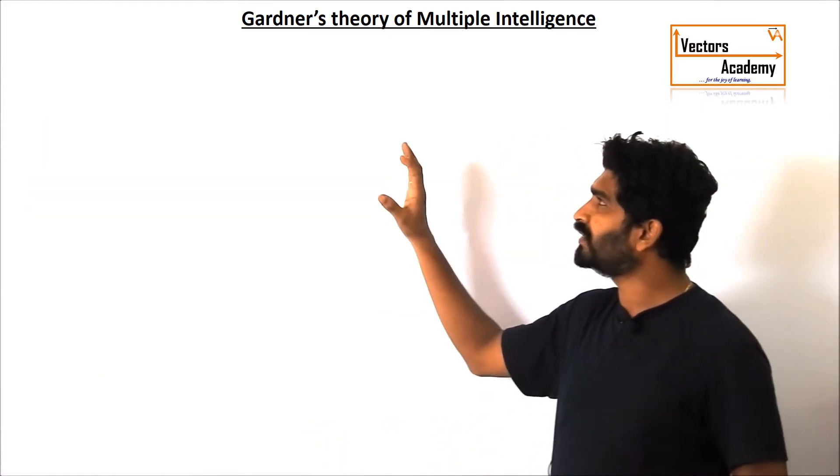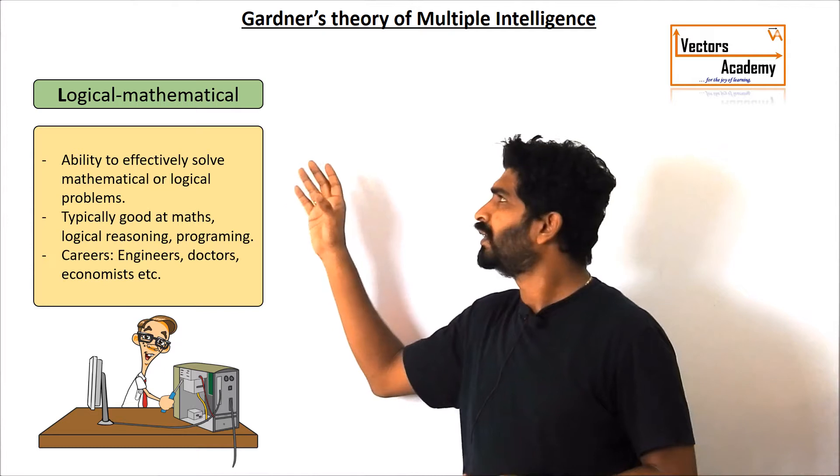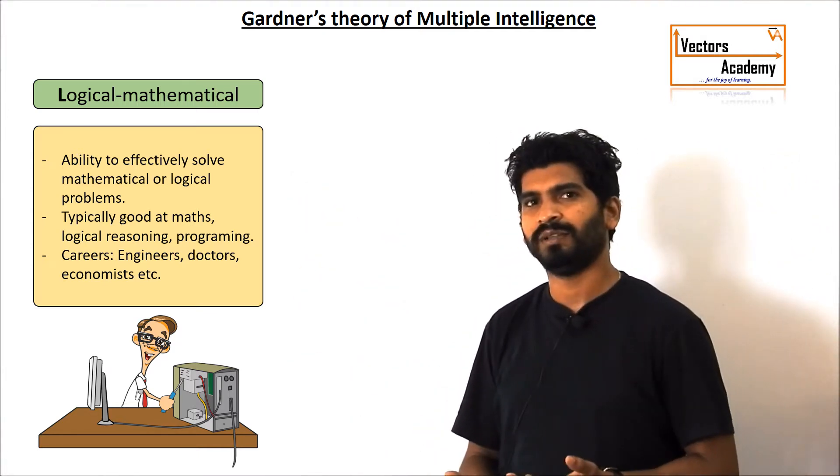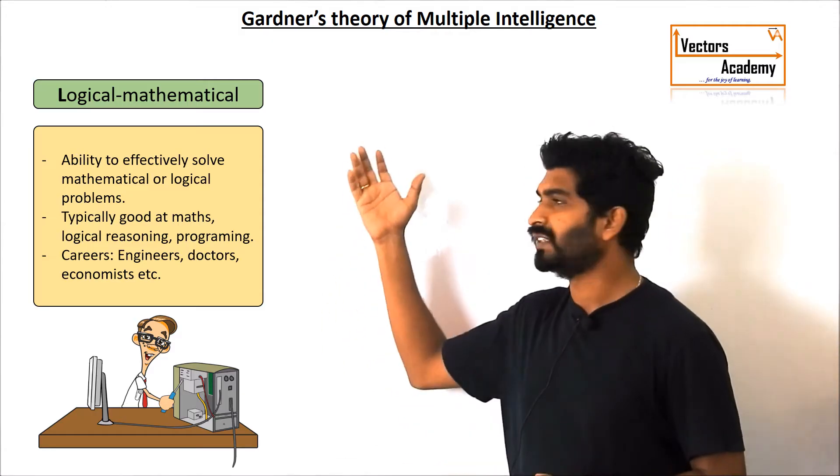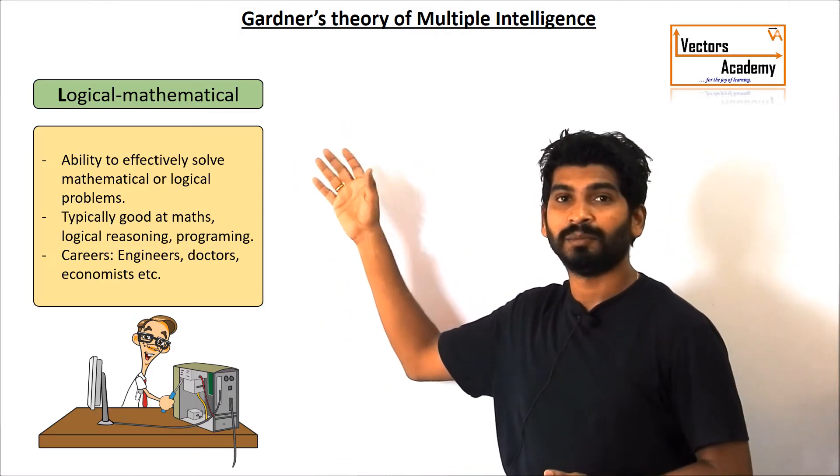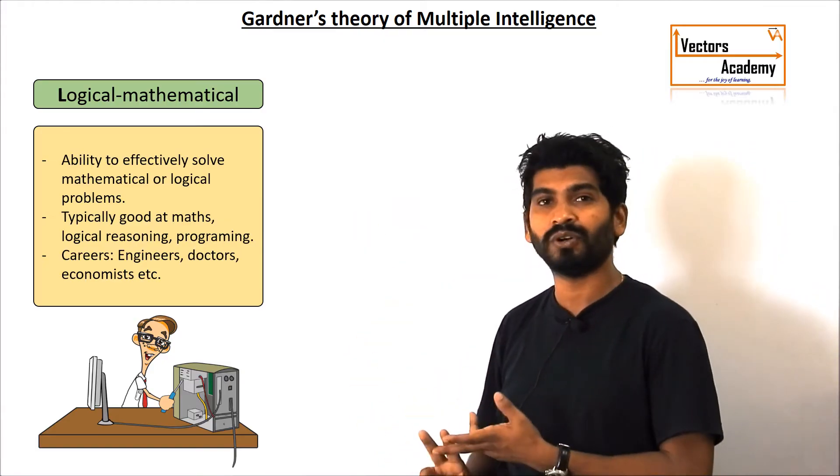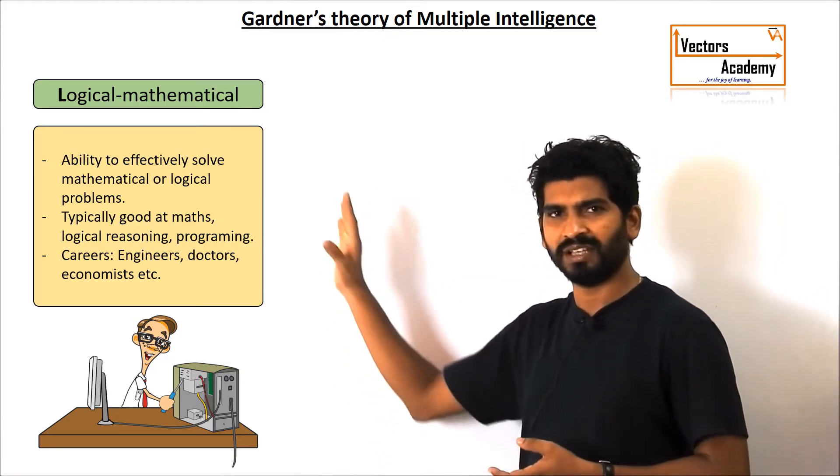Now the second intelligence you can say is logical mathematical intelligence. How fluently these people are able to solve the mathematical problems is given by this intelligence. The people who score higher in these type of intelligence could be engineers, could be doctors, could be any other professionals in their fields.